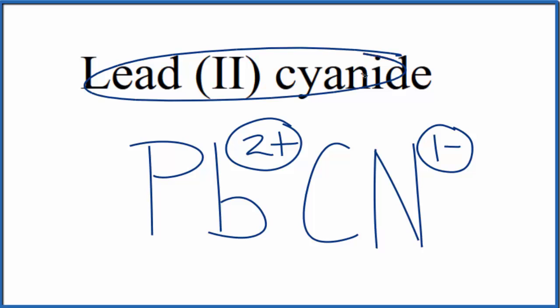That's because lead(II) cyanide is neutral, it doesn't say ion after the name. So these charges, they need to add up to zero.